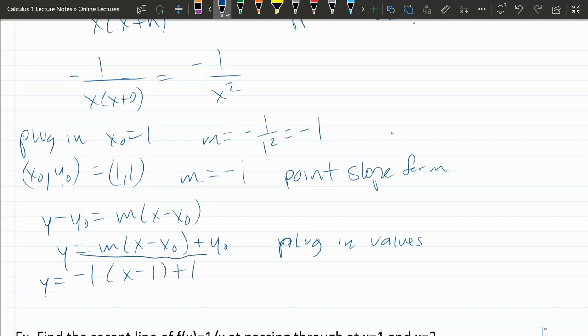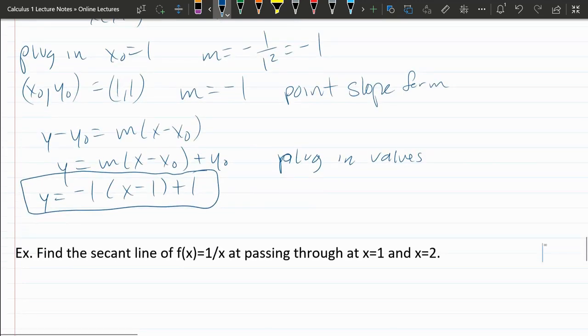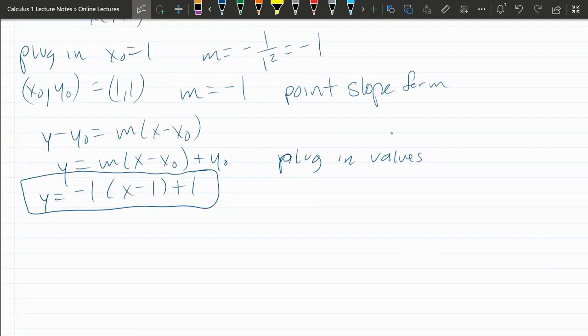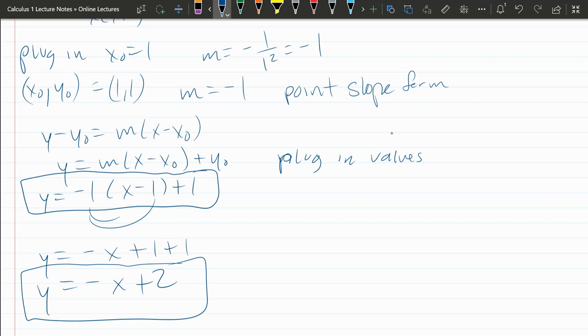This is a very good answer for either homeworks or the exam. And if you want to turn into slope-intercept form, you can distribute here. Negative x plus one plus one, which is negative x plus two. This is also a correct answer. Either form completely acceptable.